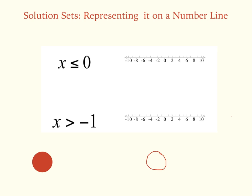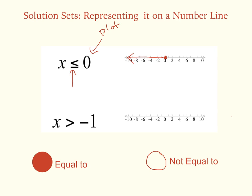When graphing solution sets, we show all possible answers for the inequality. First we need to talk about open circles and closed circles. An open circle means the number is not equal to — not included. A closed circle means the number can be equal to — it is included. For a problem with an equal to symbol, I plot a closed circle and color it in, then draw the line toward all numbers that satisfy the inequality. For x is greater than negative 1 with no equal to, I use an open circle at negative 1 and draw toward all greater numbers.